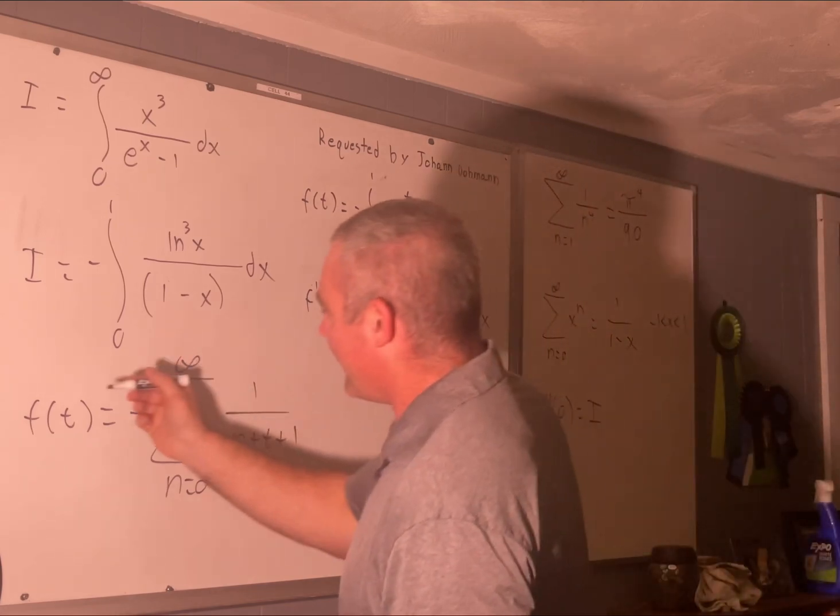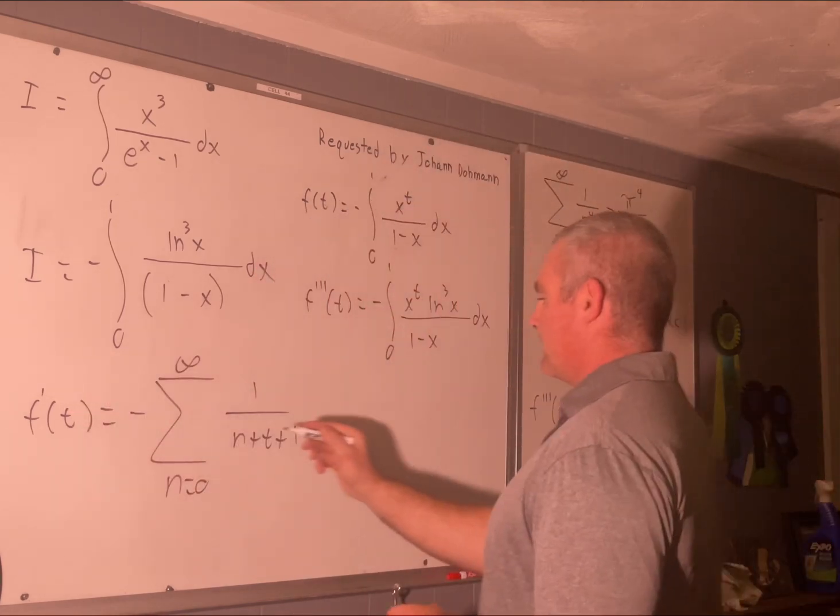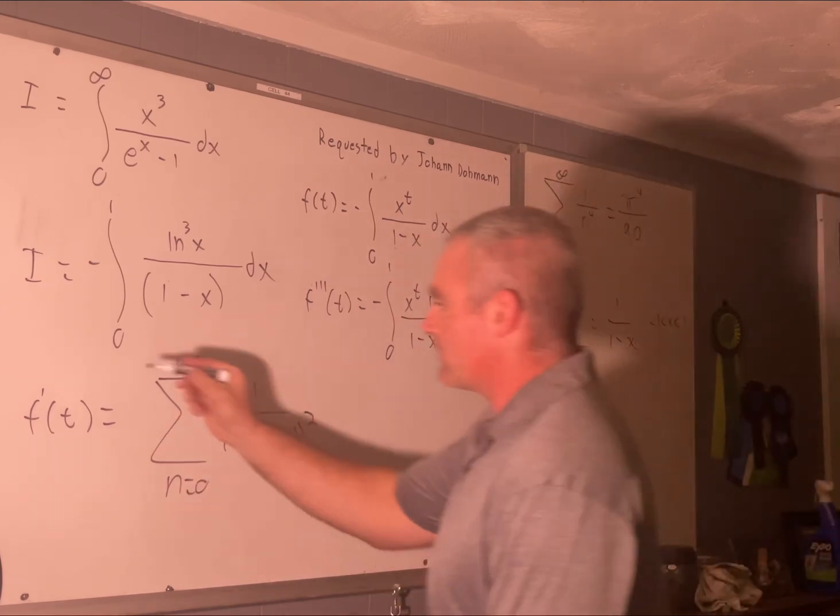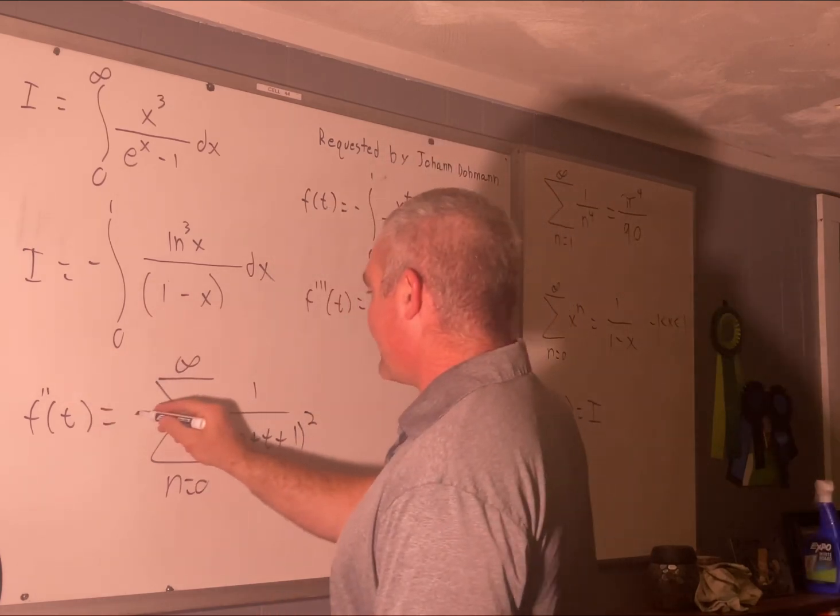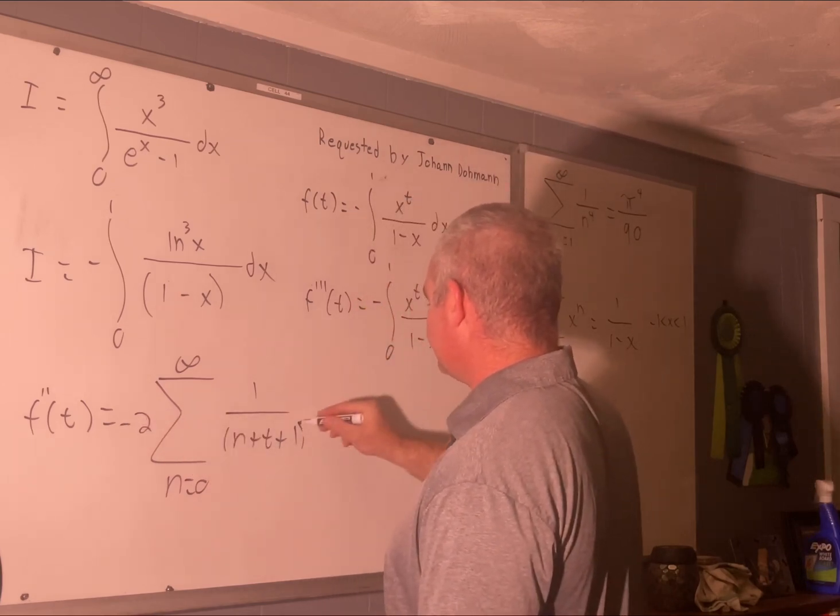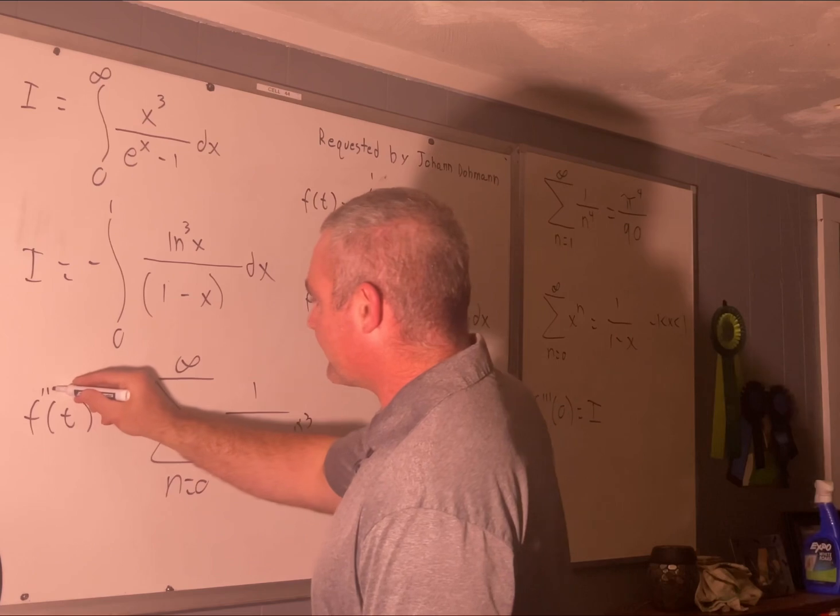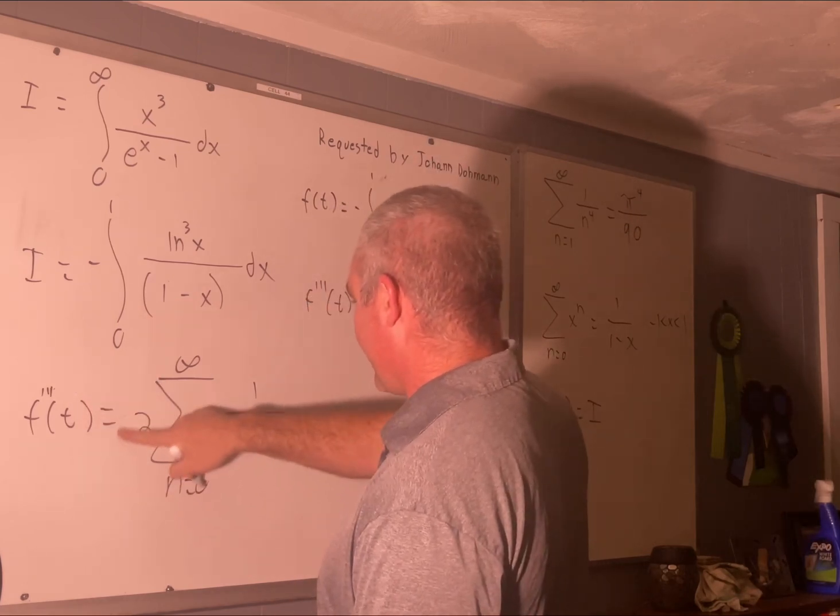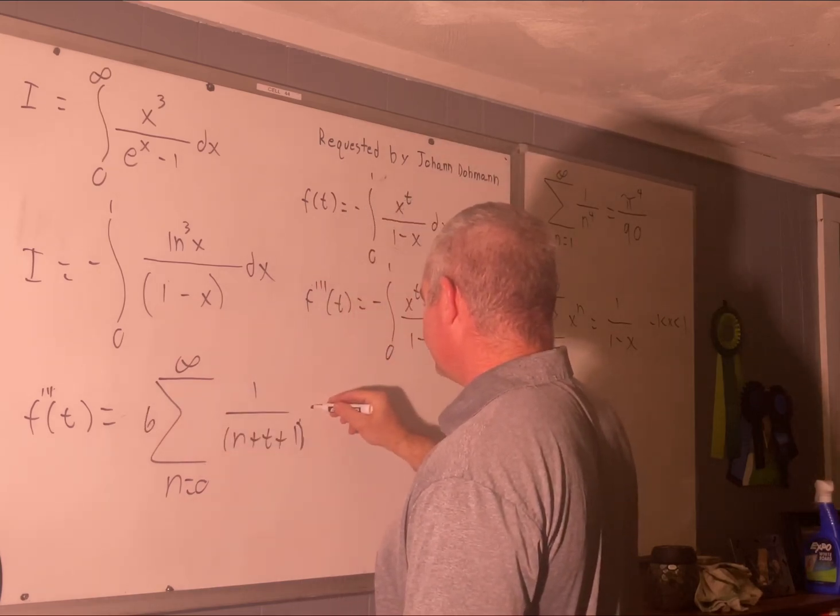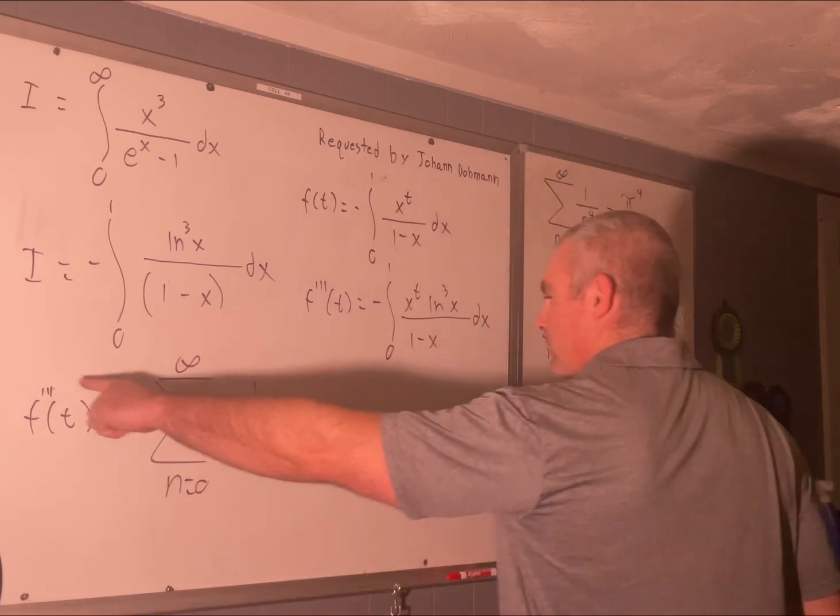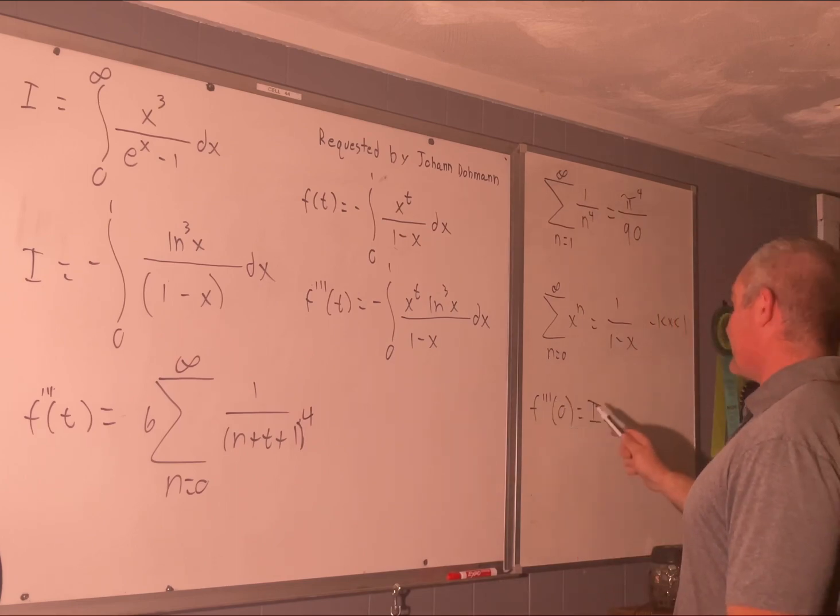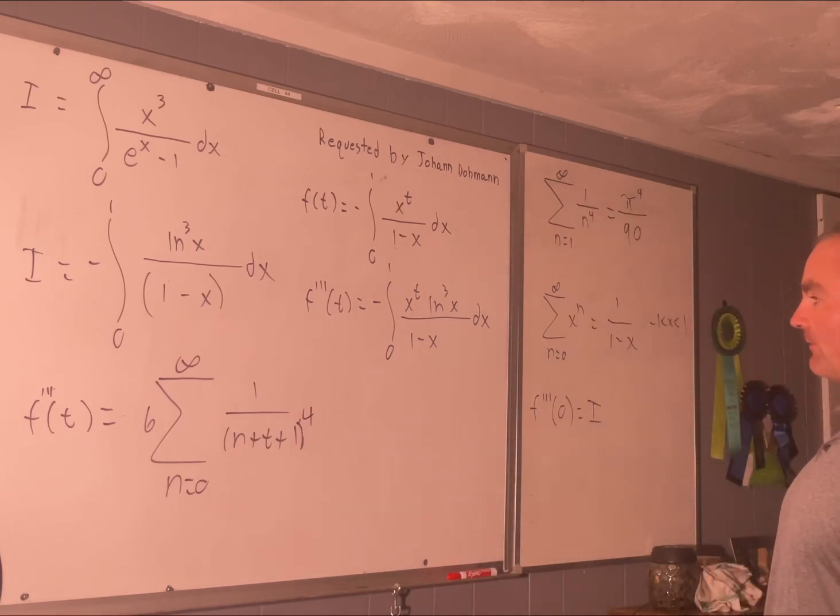All right. Now let's also take three derivatives of this function with respect to t. All right. Well, what happens if we take one derivative? Well, one derivative, this will become a squared and we'll get rid of that negative sign. That's what's going to happen. Two derivatives. We're going to get a 2 out here. We're going to cover a negative sign and this will become a 3. Another derivative will give us, we'll switch the sign again, this will become a 6, and this will become a 4. Okay. So our f triple prime of t can also be expressed this way. And we know that our f triple prime at 0 is equal to i. So what is f triple prime evaluated at 0?